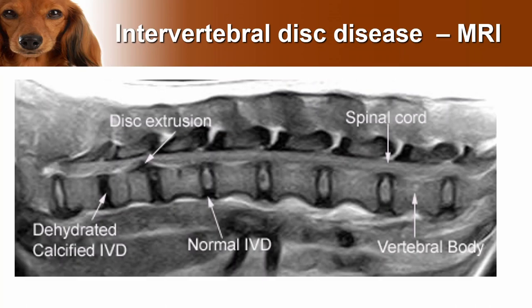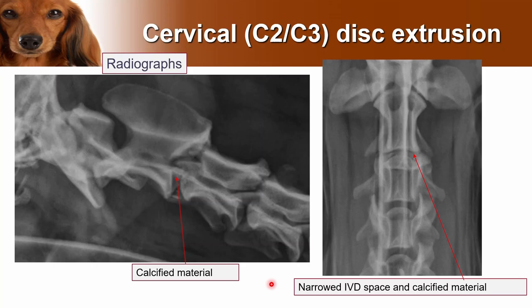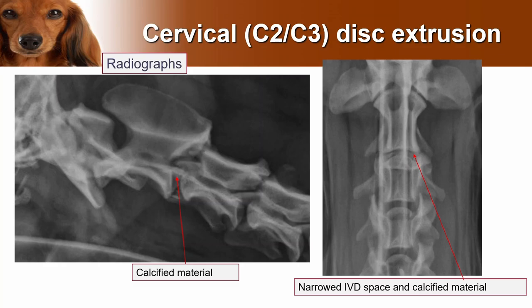The site of the disc extrusion is here — the disc which is normally between the vertebral bodies is now extruded up into the vertebral canal, and this is the spinal cord being compressed. Not everybody has access to MRI, and most vets investigating for disc disease will be taking radiographs, although those can be more difficult to interpret. This is a C2-C3 disc extrusion. The normal disc space here is radiolucent, but in this disc space you can just about see calcified material, and the disc space itself is much narrower. Radiographs can be a good indication of disc disease but don't prove extrusion or spinal cord compression — you need further imaging before surgery.